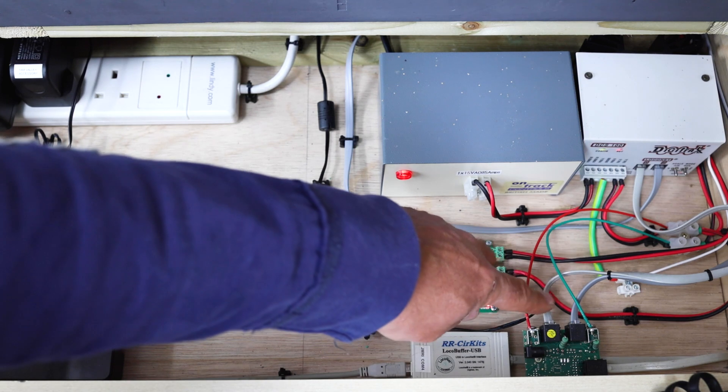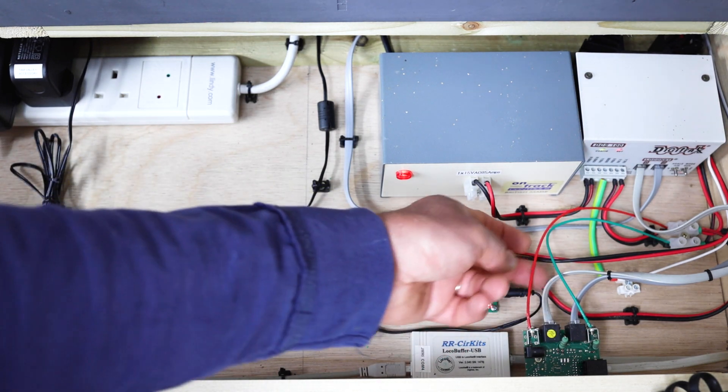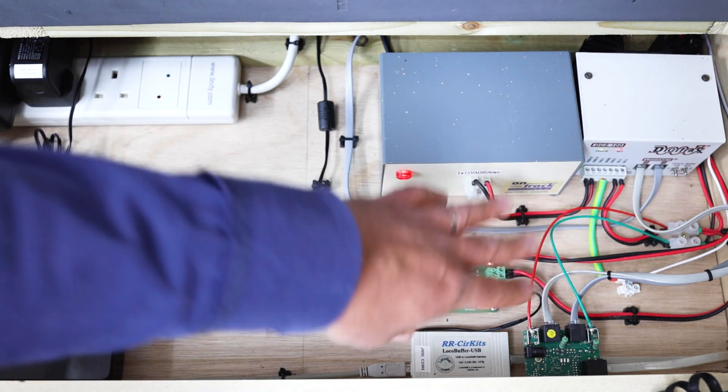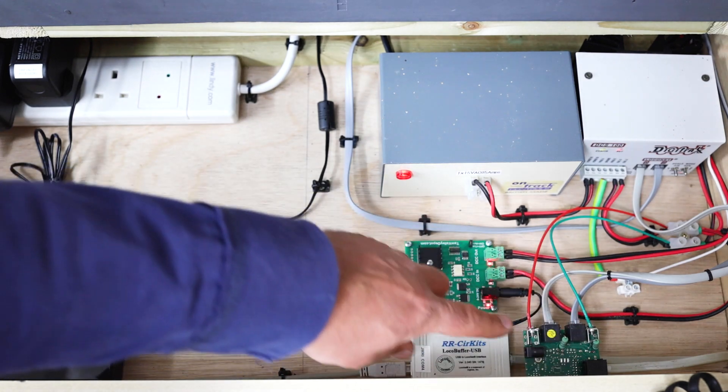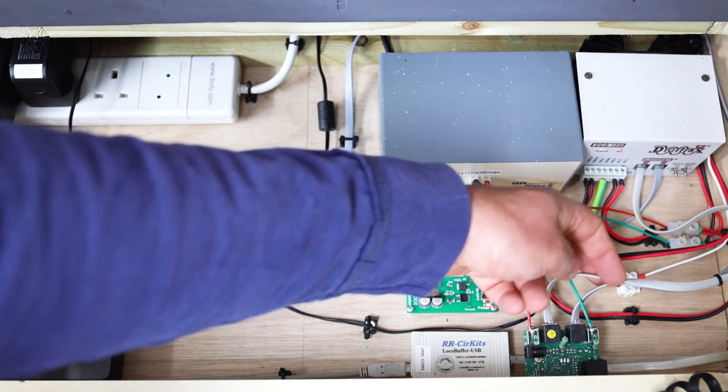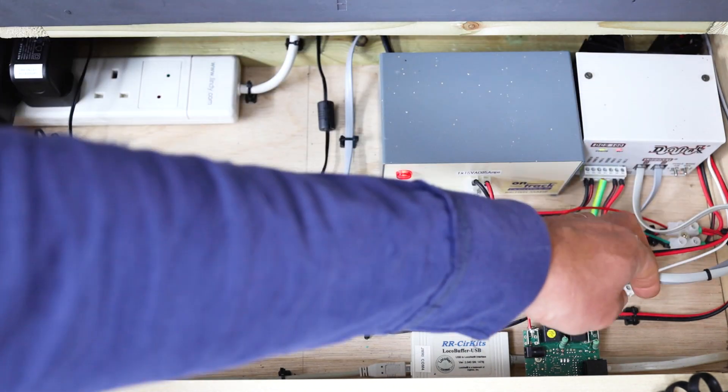This is the back of the Digitrax panel. You can see these two leads here provide a light on the front which shows me if I've got track power. And then these are the LocoNet cables that go into the command station and also go off into the layout itself.